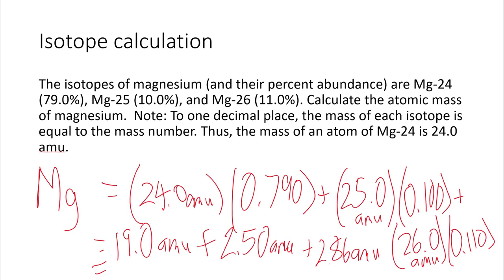So then you add those up, 19 plus 2.5 plus 2.86, and you get 24.4 AMUs. And that kind of makes sense if you see that the 24.4 is in between the 24, the 25, and the 26. And because 79% of them are 24, it's going to be closer to that answer. It's like a weighted average, like your grade.